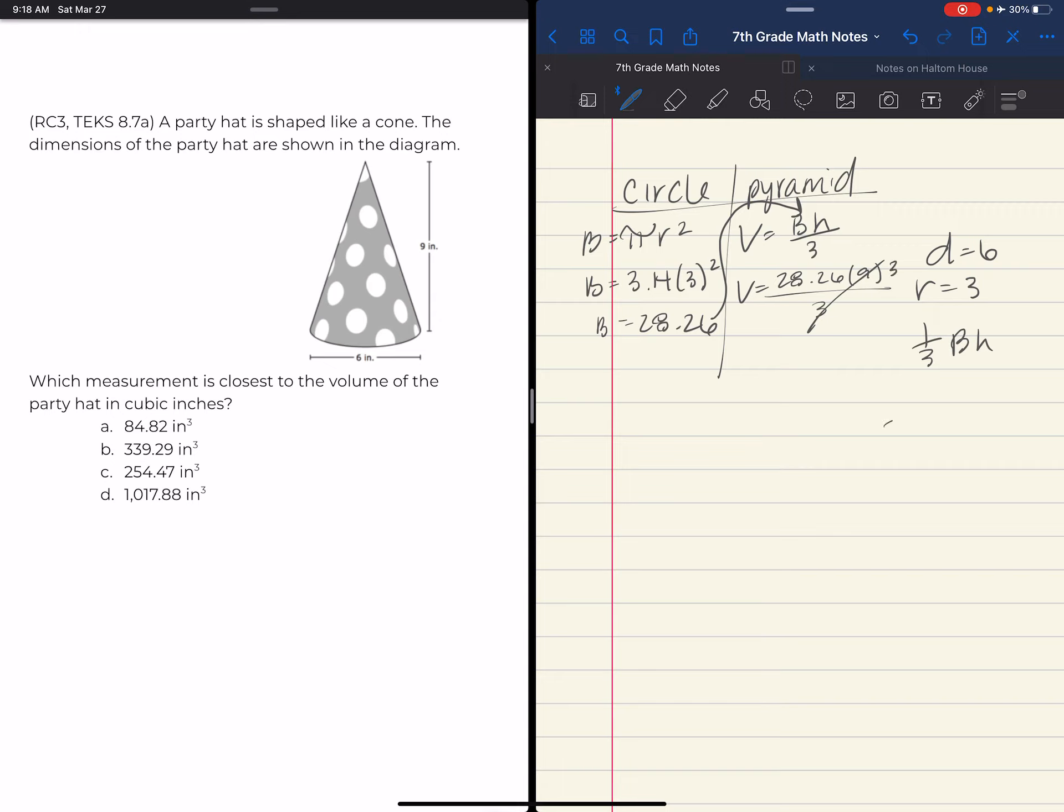So, now I'm just doing 28.26 times 3 instead of doing times 9 divided by 3. 6 times 3 is 18, 2 times 3 is 6, 7, 8 times 3 is 24, 2 times 3. I got 84.78.